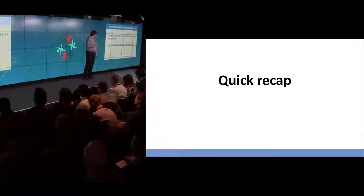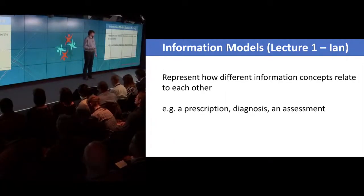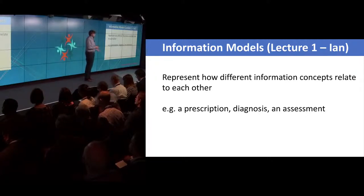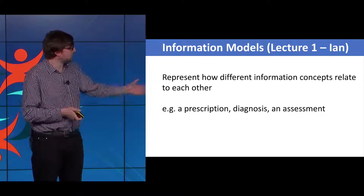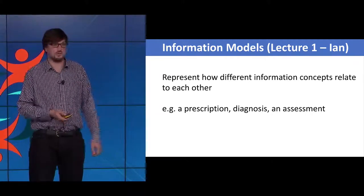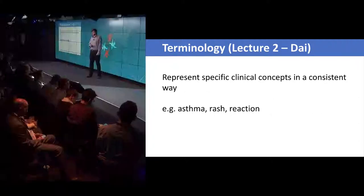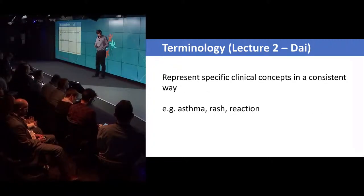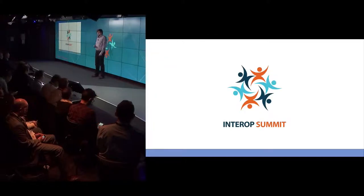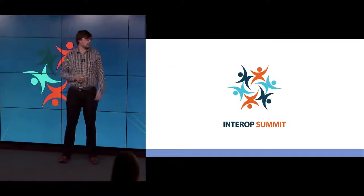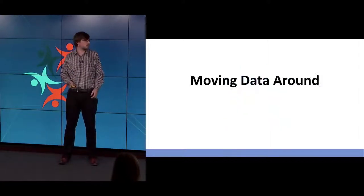So a quick recap. Lecture 1: we heard Ian talk about information models and he told us how they can let us represent how different information concepts relate to each other. They give us context between specific information concepts, things like an assessment or a prescription. And we heard Di talk about clinical terminology, which gives us a way of representing specific clinical concepts — individual clinical concepts — things like a rash or an adverse reaction. We have our information models and terminology to help us understand data, but how do we start moving that around?